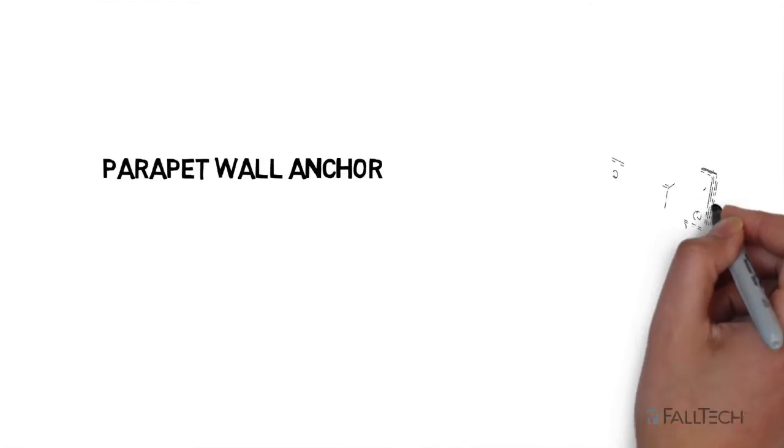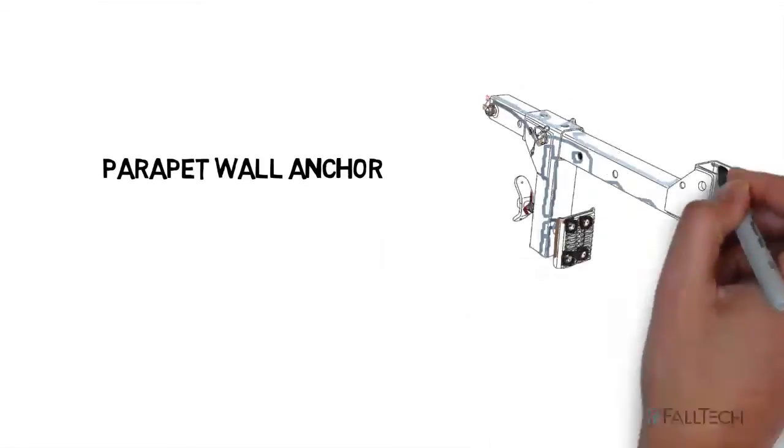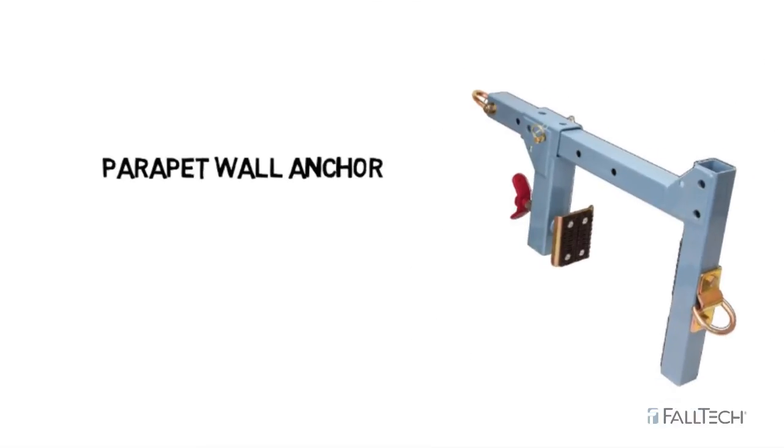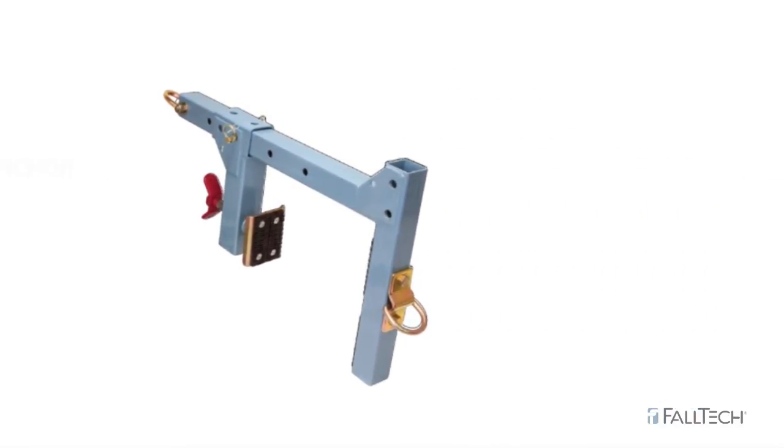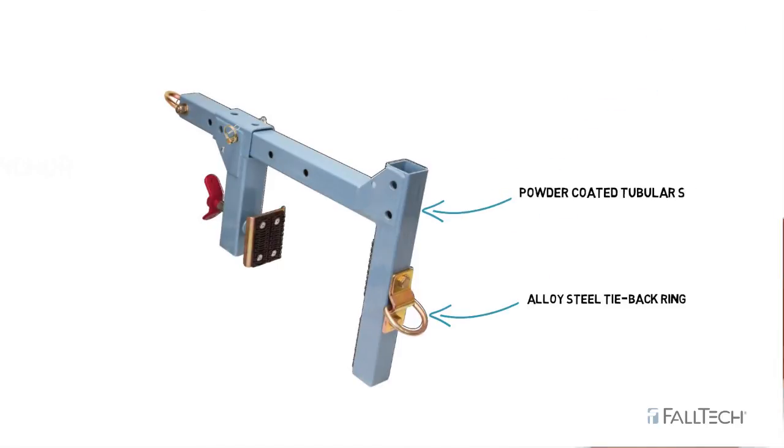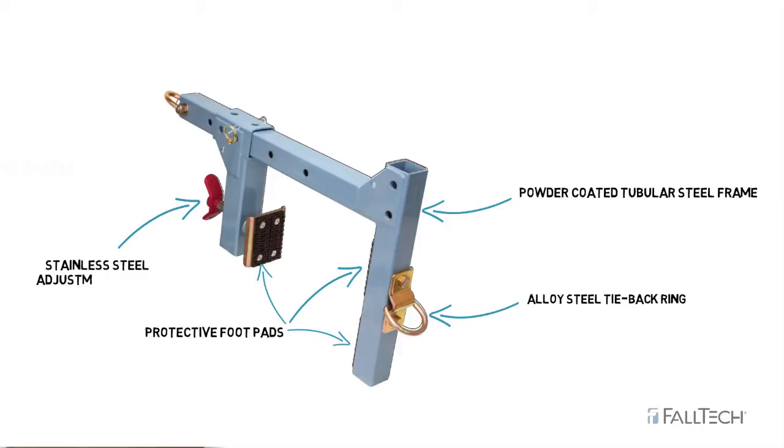Introducing the Parapet Wall Anchor from Falltech. The Parapet Wall Anchor consists of a fall arrest anchorage derake mounted to a powder-coated tubular steel frame. Protective foot pads on the main body and on the adjustment clamp hold the anchorage securely in place.